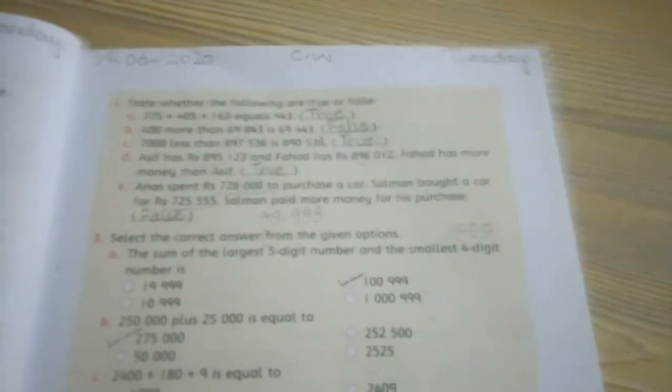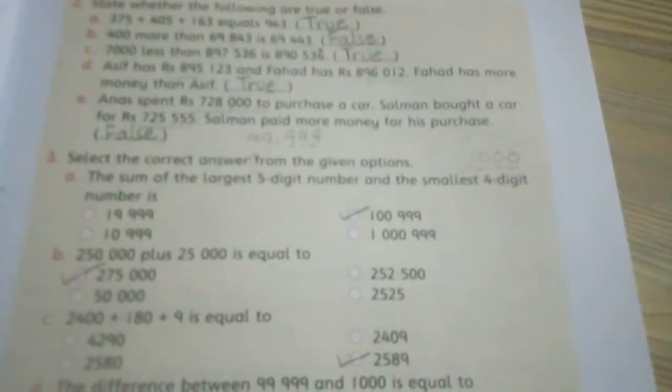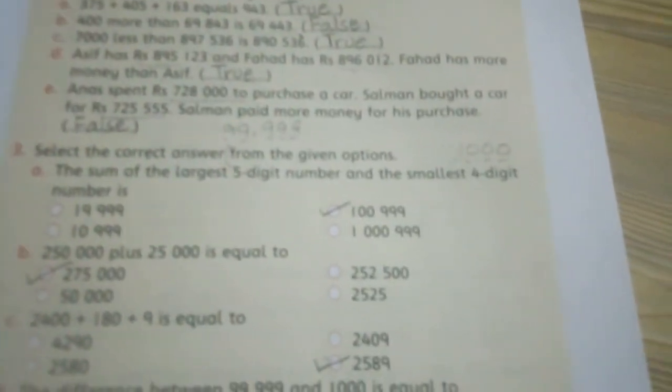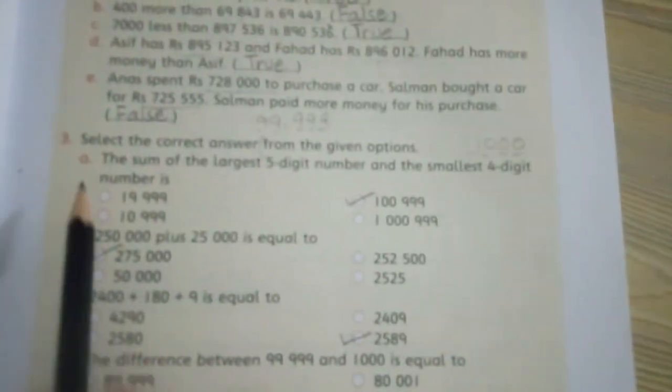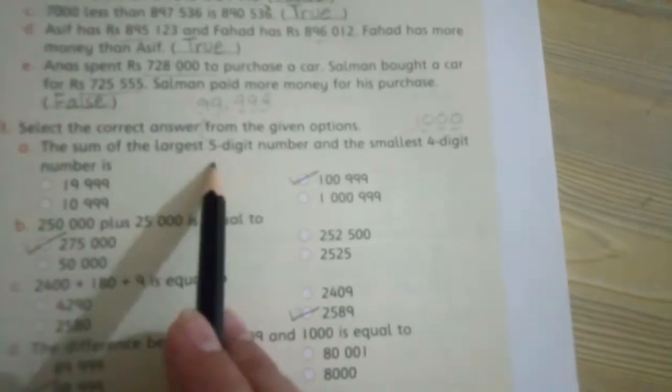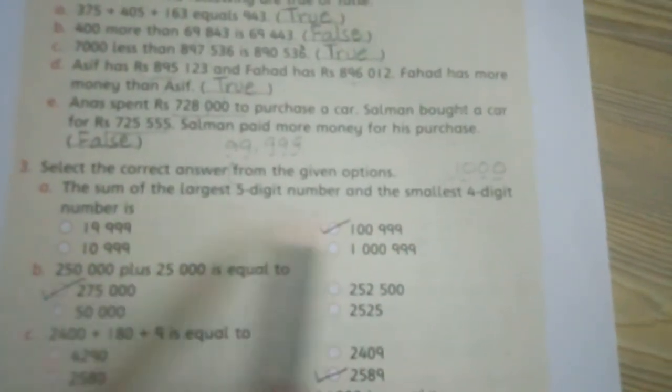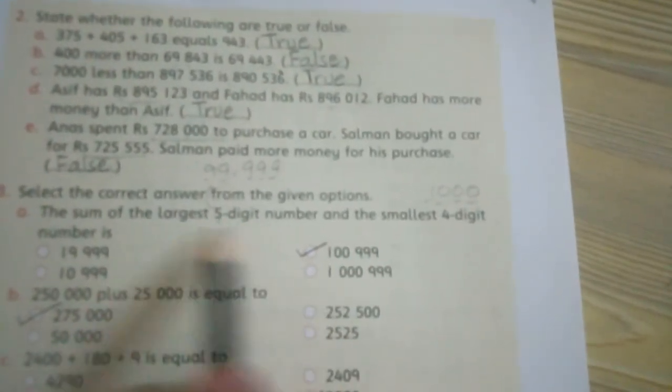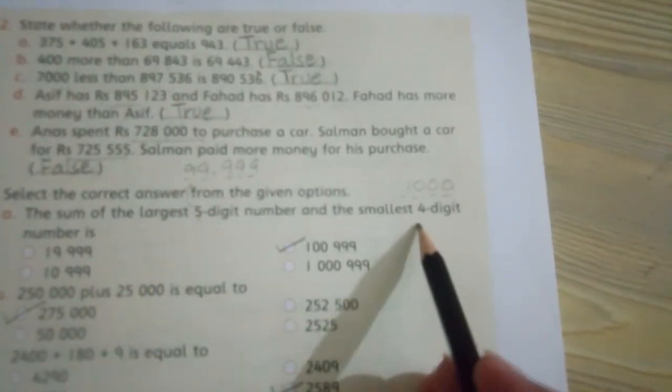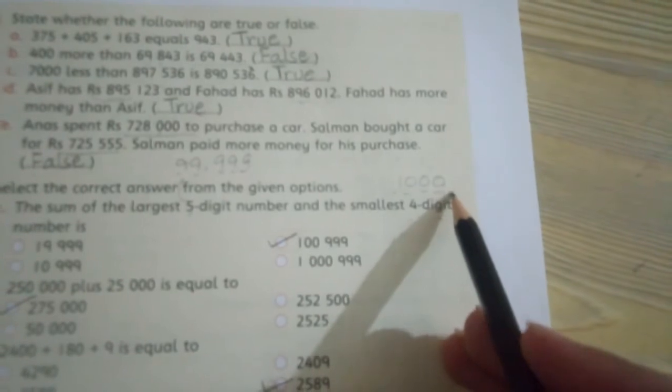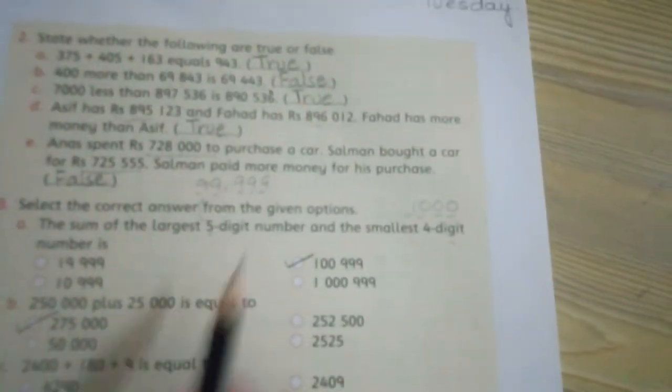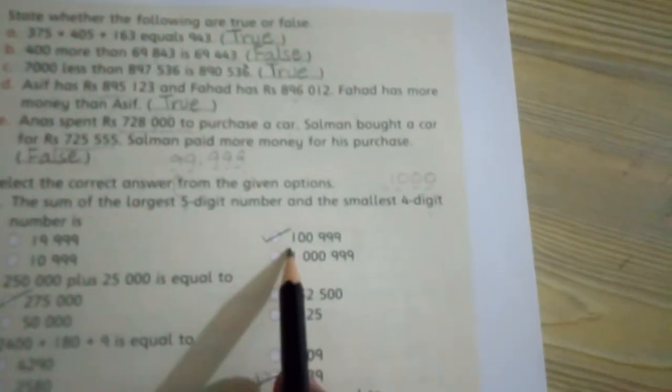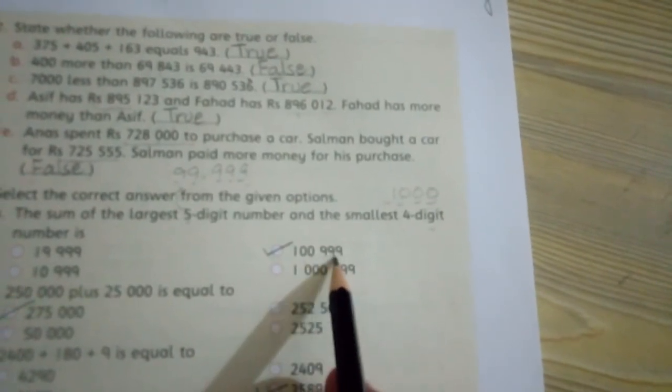Question 3: Select the correct answer from the given options. Part A: The sum of the largest five digit number and the smallest four digit number. The largest five digit number is ninety nine thousand nine hundred ninety nine. The smallest four digit number is one thousand. When you add them, you will get one hundred thousand nine hundred ninety nine.